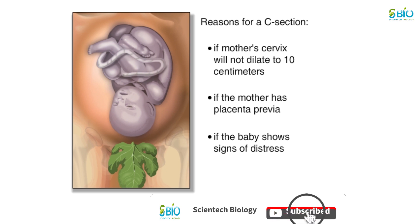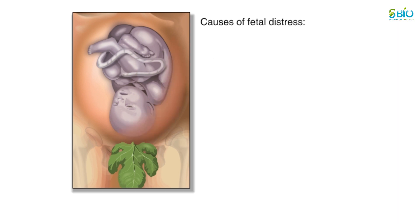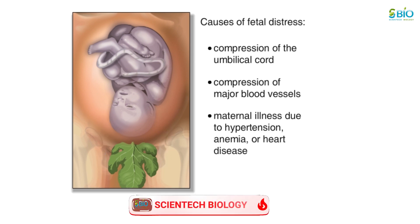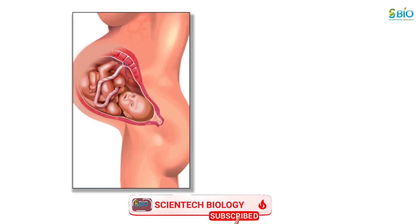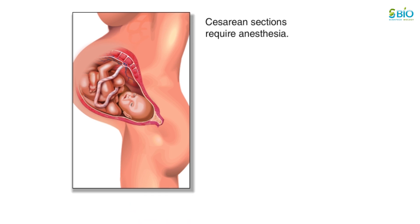A C-section may also be performed if there are signs of fetal distress, which is when the fetus is in danger because of decreased oxygen flow. Some common causes of fetal distress are compression of the umbilical cord, compression of major blood vessels in the mother's abdomen due to her birthing position, and maternal illness due to hypertension, anemia, or heart disease.